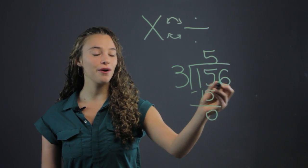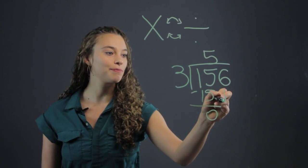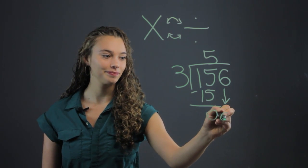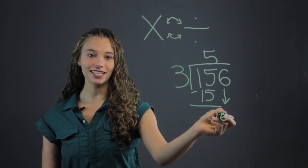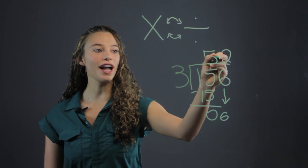Then we have to bring down any remaining numbers. Well, there's still a 6 left. So we bring down the 6. We do 3 into 6. That goes in 2 times. We write the 2 right above the 6.